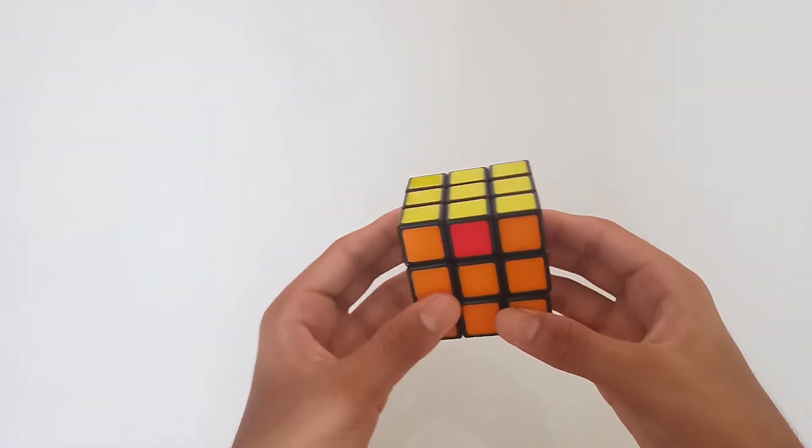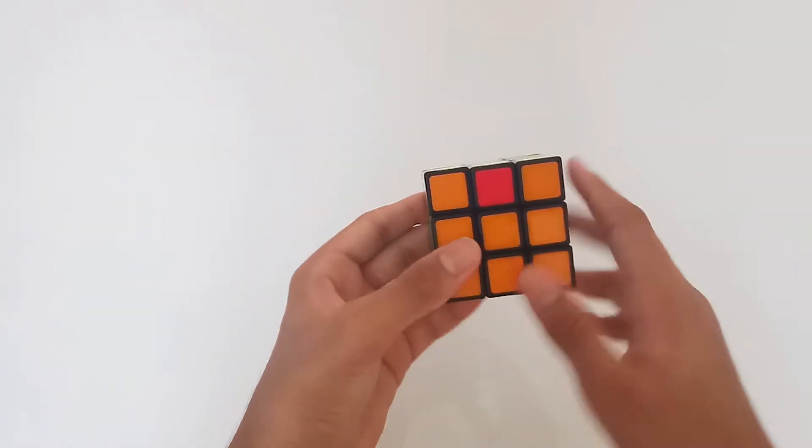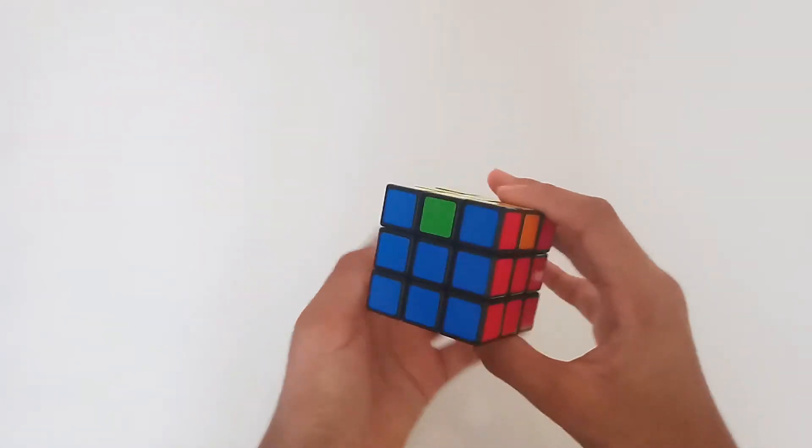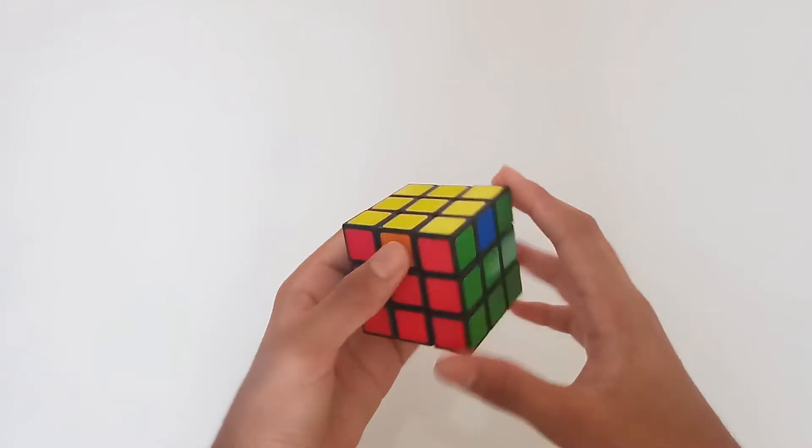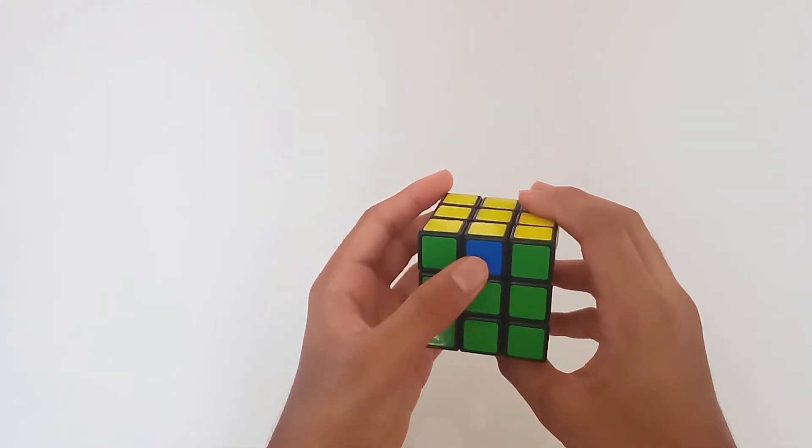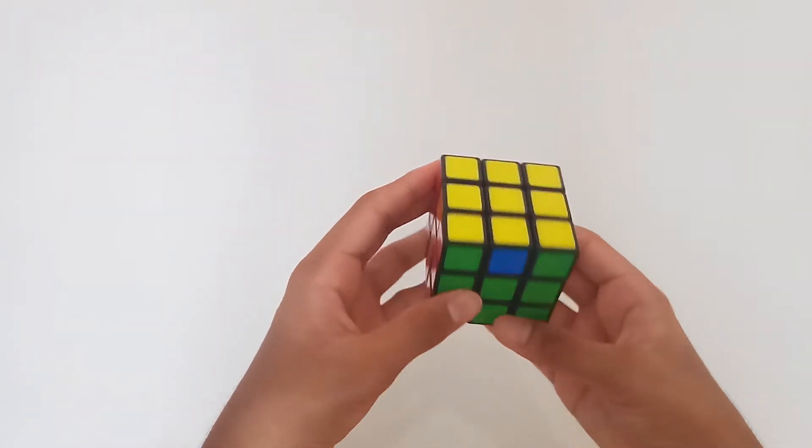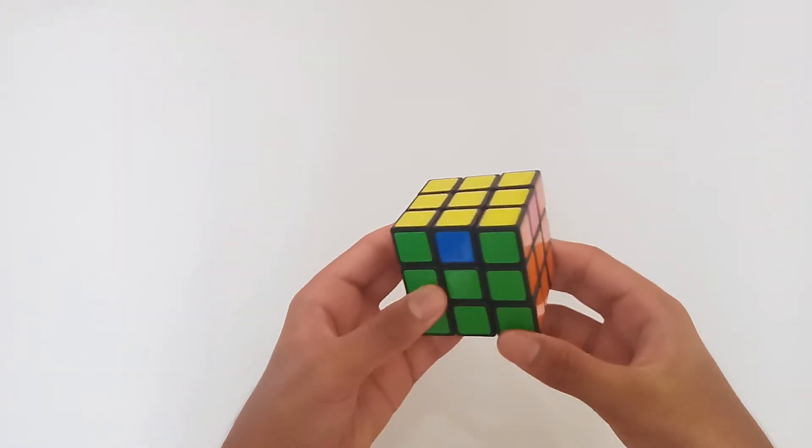Another one of the cases you'll get looks like this, where the orange side has the red edge piece, the blue side has the green edge piece, the red side has the orange edge piece, and the green side has the blue edge piece. We can solve it with one of two algorithms. This is the first algorithm.